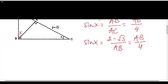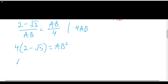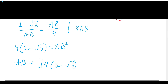From here, we can write down: (2 − √3) over AB equals AB over 4. We can multiply both sides by 4·AB and get 4·(2 − √3) = AB². Therefore AB equals the square root of 4·(2 − √3), which we can simplify to 2√(2 − √3).